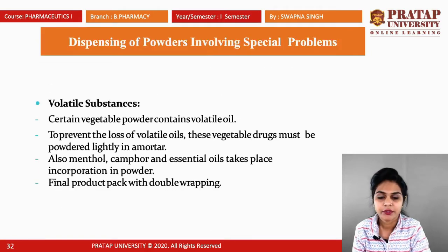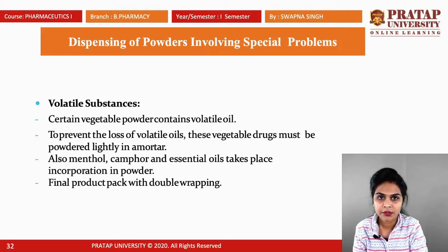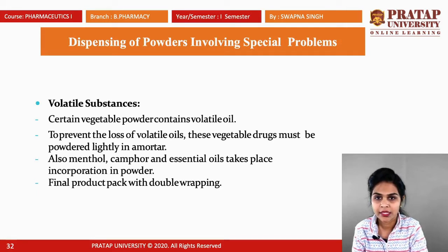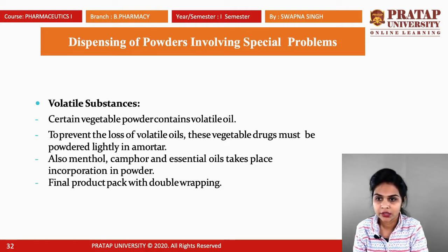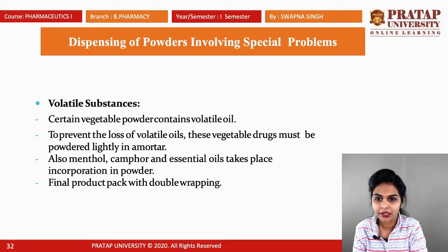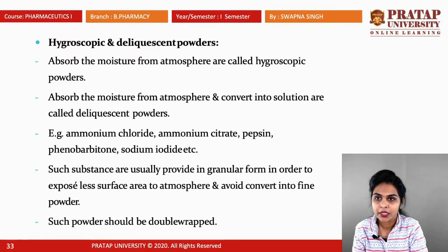There are various kinds of substances used in the preparation of pharmaceutical powders, such as volatile, hygroscopic, or deliquescent substances, which cause special problems. For volatile substances, certain vegetable powders contain volatile oils. To prevent the loss of volatile oils, these vegetable drugs must be powdered lightly in a mortar. Menthol, camphor, and essential oils are incorporated into the powder, and the final product is packed with double wrapping.